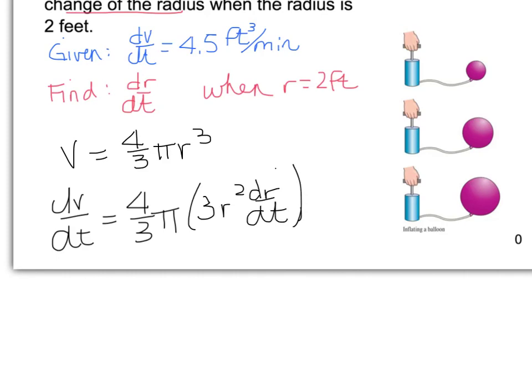When I simplify, we get dV/dt is equal to 4/3 times 3, which gives us 4 pi r squared dr/dt.